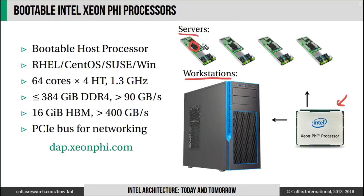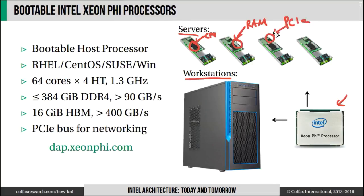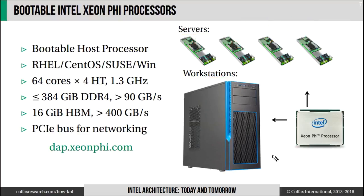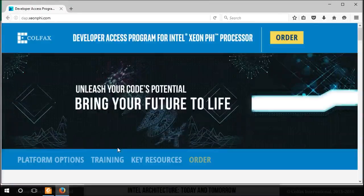In a server, you can see the cooling solution with the CPU underneath it. There are also memory slots, and if you look closely, you will find a PCI Express connector for optional networking. In a workstation, you get similar hardware running entirely off the Xeon Phi processor, but you also get an air or liquid cooling solution, making it quiet, along with additional PCI Express slots for additional devices. To learn more about these models, you can visit app.xeonphi.com.